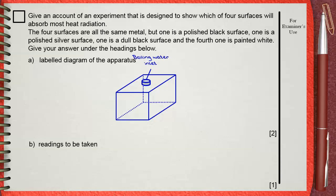So now the cube is filled with boiling water. Each side of this metal cube will be painted with one color. One will be painted polished black, one polished silver, one is dull black, and the fourth one is painted white.